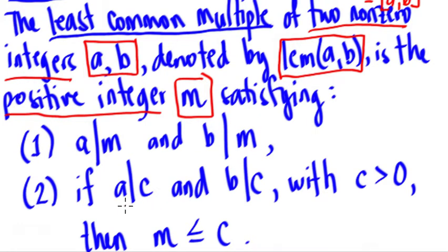Secondly, if a was also a factor of some integer c and likewise b is a factor of some integer c with c greater than 0, then since we define that m is the least, therefore m is less than or equal to c. So c, if there's a c, is just common, but it's not the least common multiple.